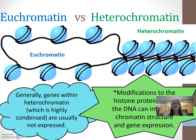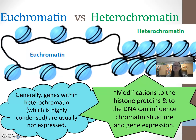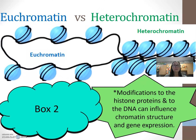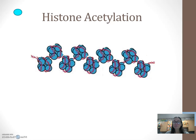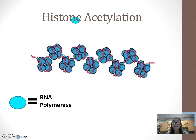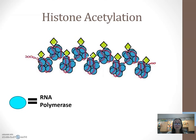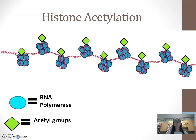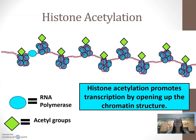We can modify the histone proteins and the DNA to influence whether it's euchromatin or heterochromatin. One option is histone acetylation. This blue circle represents RNA polymerase, which is blocked from transcribing if the chromatin is tightly condensed as heterochromatin. What can happen is acetyl groups are added to the histone proteins. When the acetyl groups attach, it causes the chromatin to unwind and loosen. Now RNA polymerase can attach to a promoter sequence and transcribe. So histone acetylation promotes or encourages gene expression by opening up that chromatin structure.